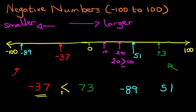Now, which number is larger? Is it 51 or 89? Well, same as the previous example, 51 is further to the right. Therefore, it is larger. 51 is larger than minus 89. The arrow is pointing to the smaller number.